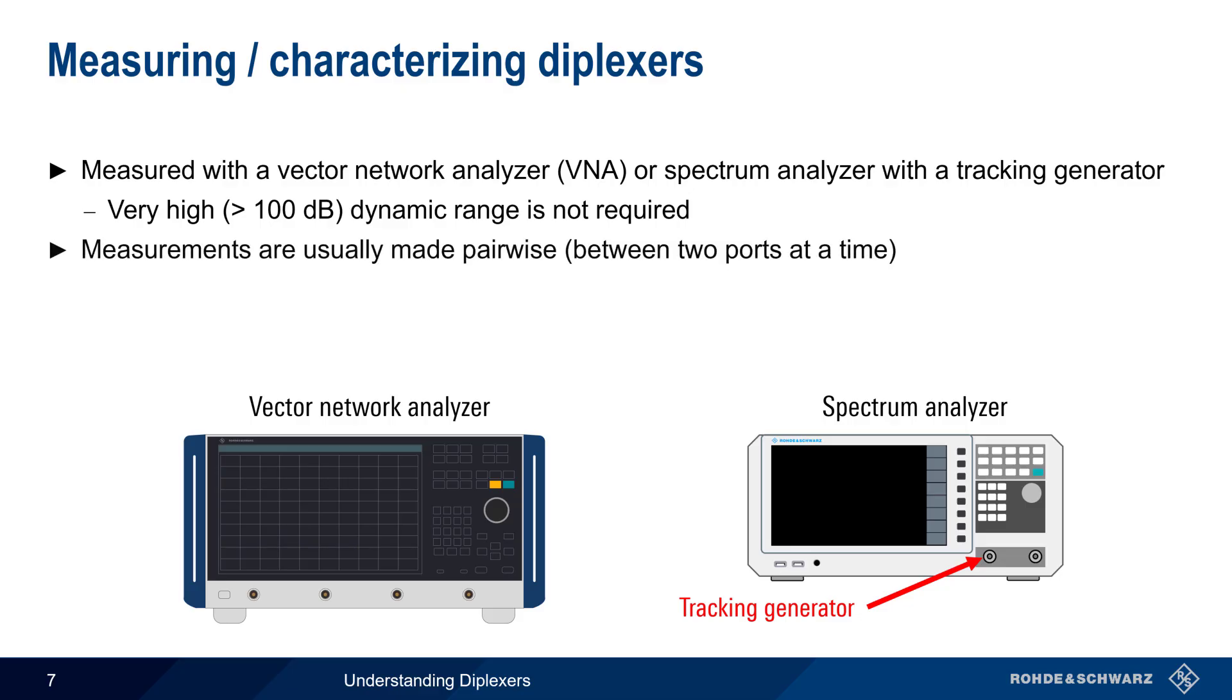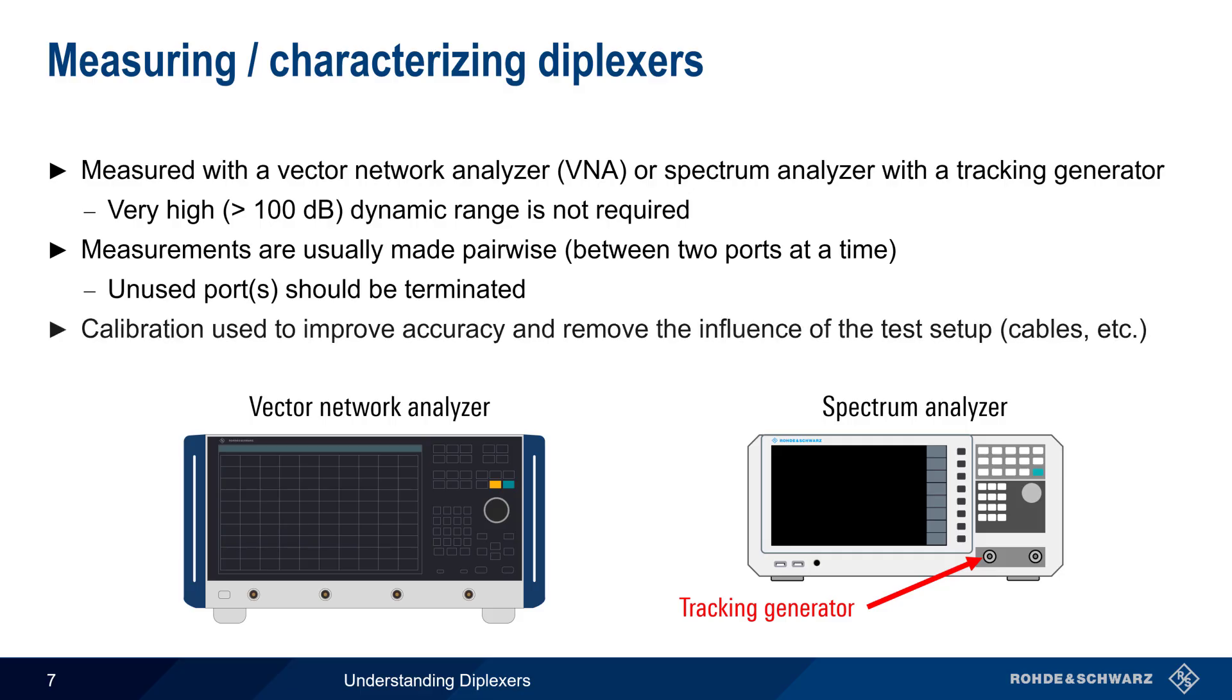Most diplexor measurements are made pairwise, or between two ports at a time. Unused ports should be appropriately terminated. And as with other network measurements, a calibration should be performed to improve accuracy, as well as to remove the influence of the test setup, such as the connectors, cables, etc.